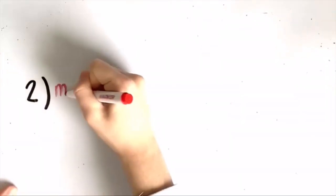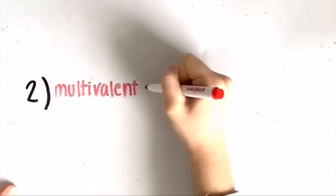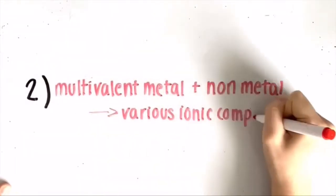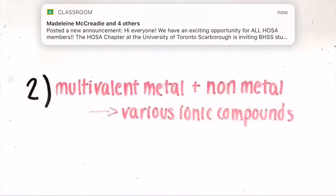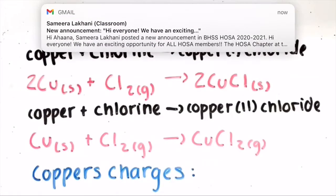Secondly, a multivalent metal reacts with a non-metal to form various ionic compounds. For example, copper plus chlorine yields copper 1 chloride, and copper plus chlorine yields copper 2 chloride.